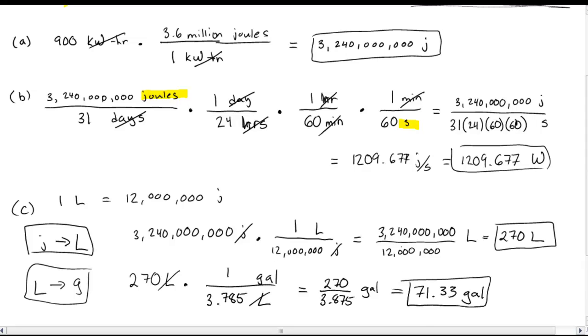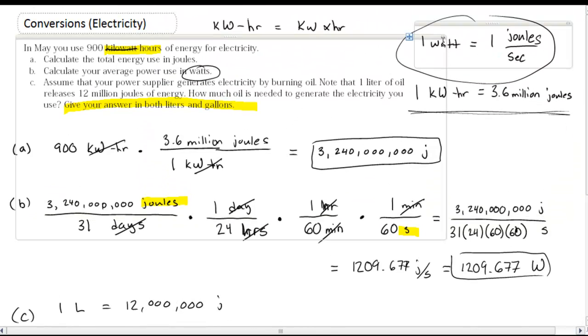So lots of stuff going on there. I think the trickiest part though is just to remember these energy units. Joules per second. 1 joule per second is 1 watt. 1 kilowatt hour is 3.6 million joules. If you can remember these two conversions, which on a test you would either be given those or they'd be on a sheet for you. But just make sure you know how to use them in the right spots.